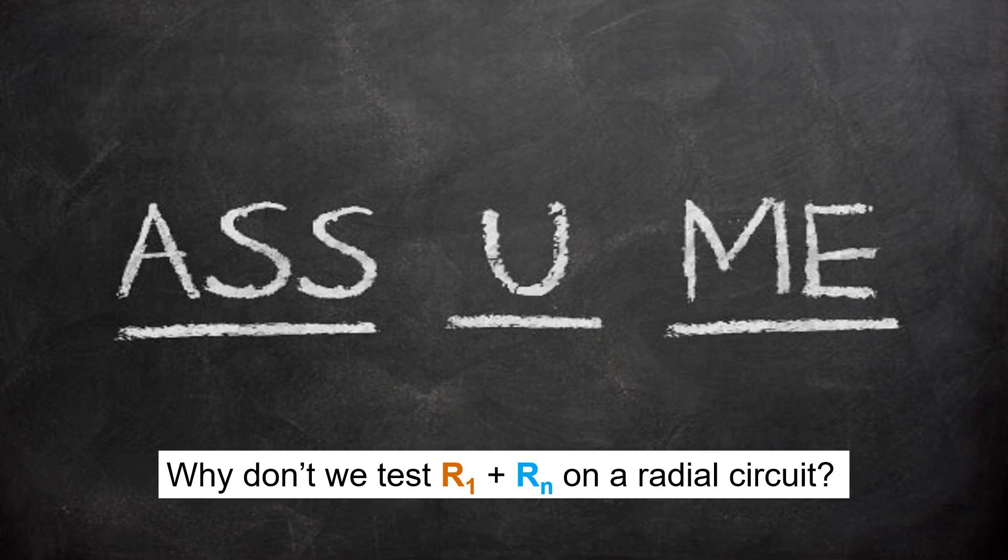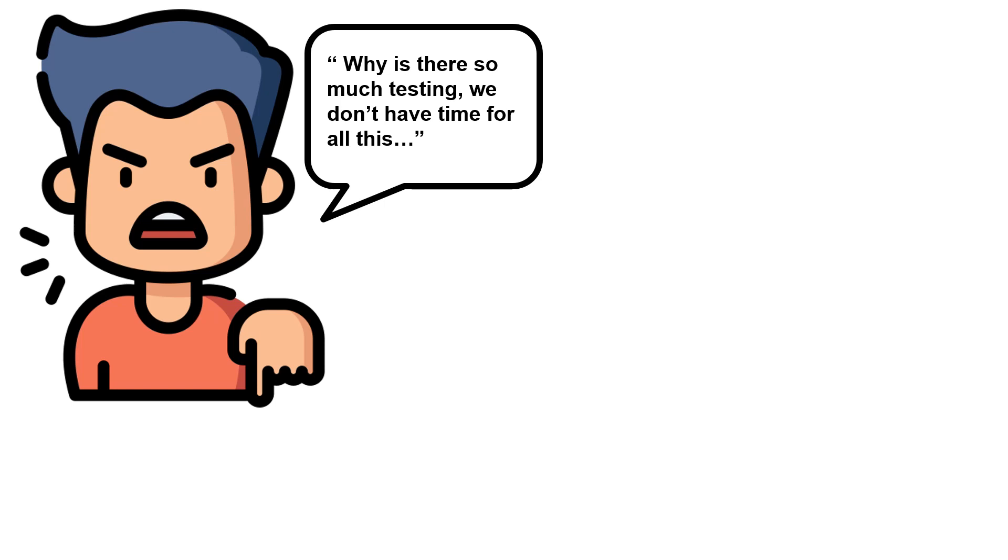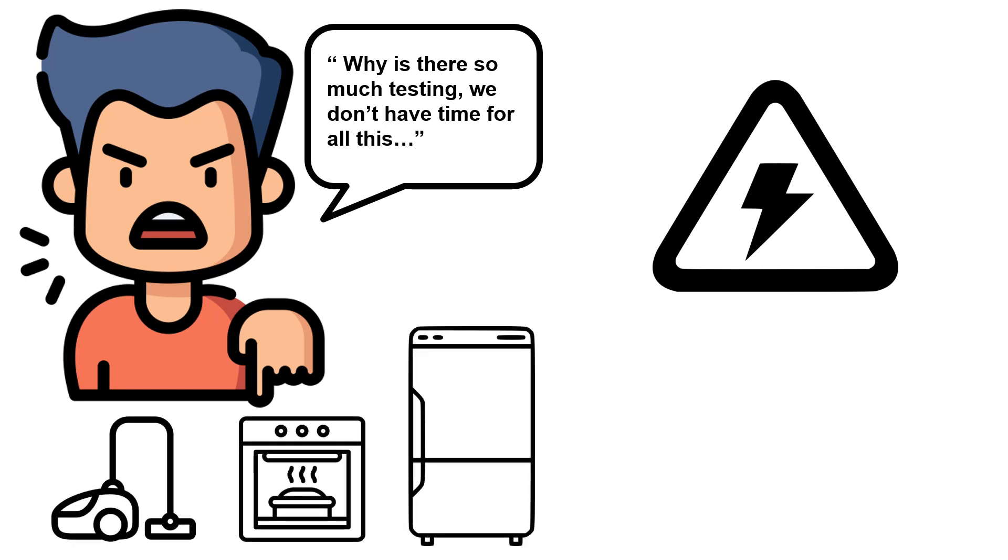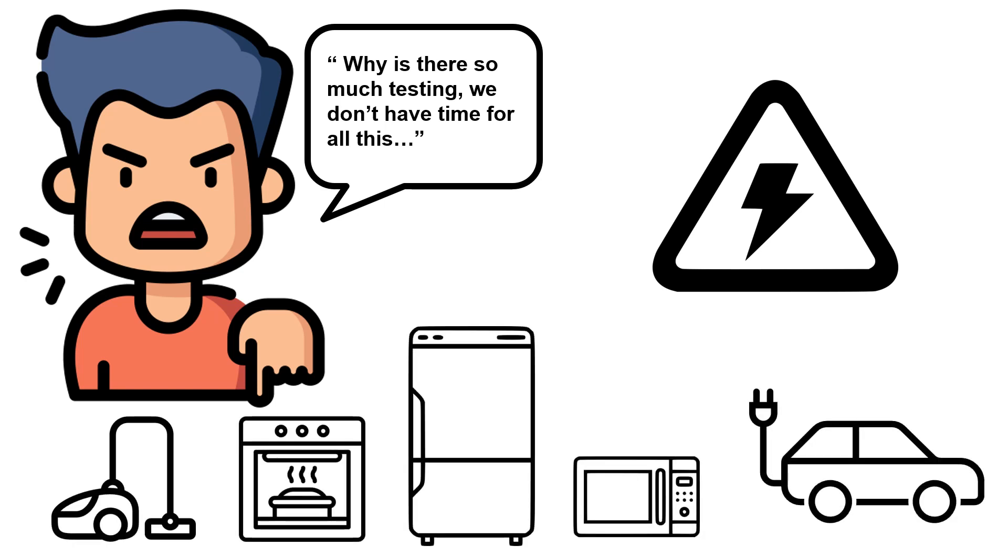Personally, I do not agree with assuming that R1 plus Rn on radial circuits complies just because the R1 plus R2 did. We all know what they say about assumption and if you do not test R1 plus Rn on every circuit, then how would you prove beyond all reasonable doubt that there was no fault on the neutral conductor? And so many reasons why, but apparently, and I don't know how true this is, but the logic behind not doing the test is that people already complain about how much testing is required and simply won't do the test. Or the worst thing that can happen is that the appliances just won't work, which we all know just isn't true.